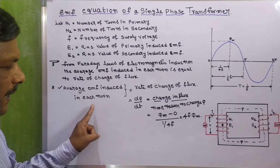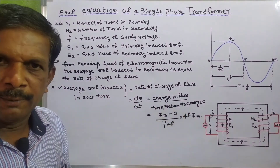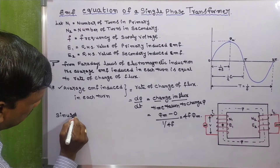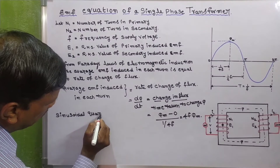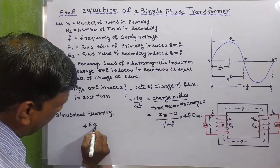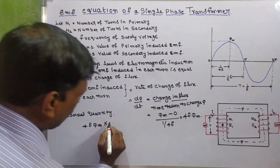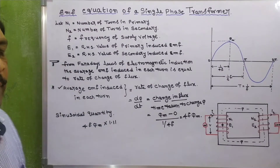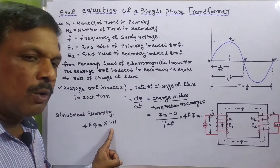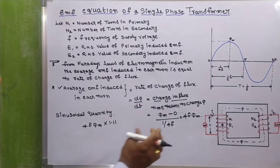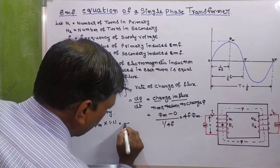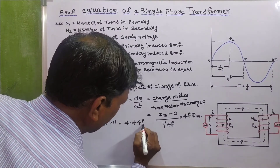The average EMF induced in each turn is equal to 4Fφ_max. For a sinusoidal quantity, we multiply by the form factor of 1.11, where form factor equals RMS value divided by average value, which equals 1.11. So the RMS EMF induced in each turn becomes 4 × 1.11 × Fφ_max, giving us 4.44Fφ_max.